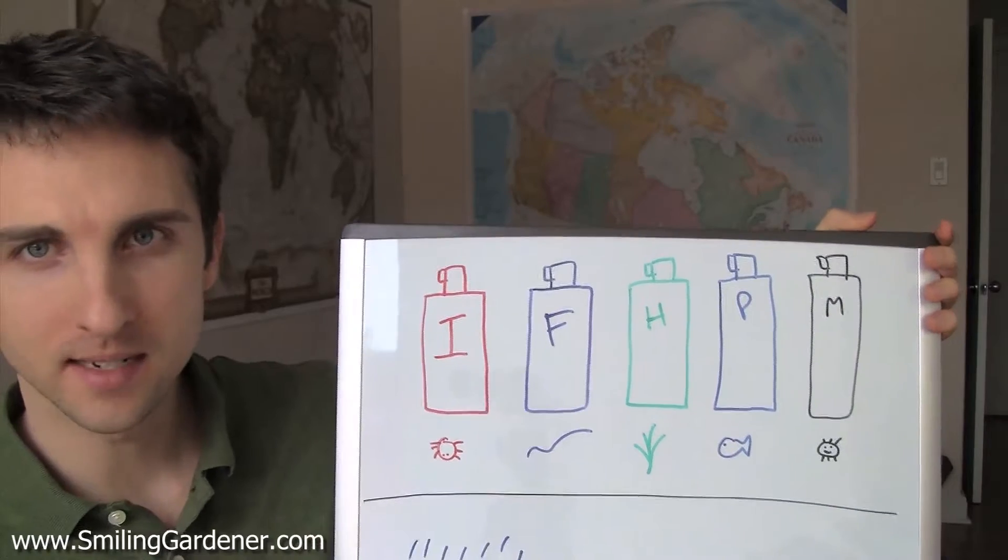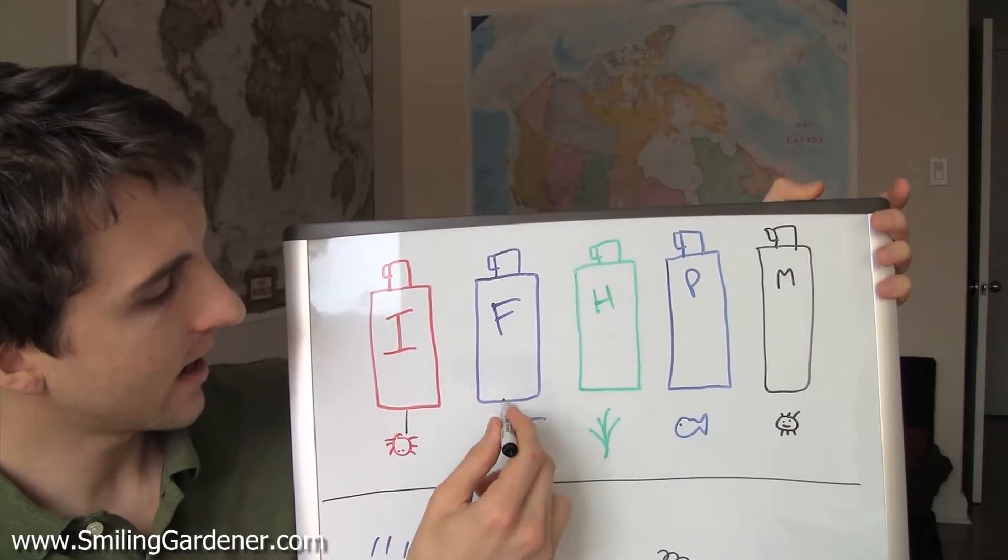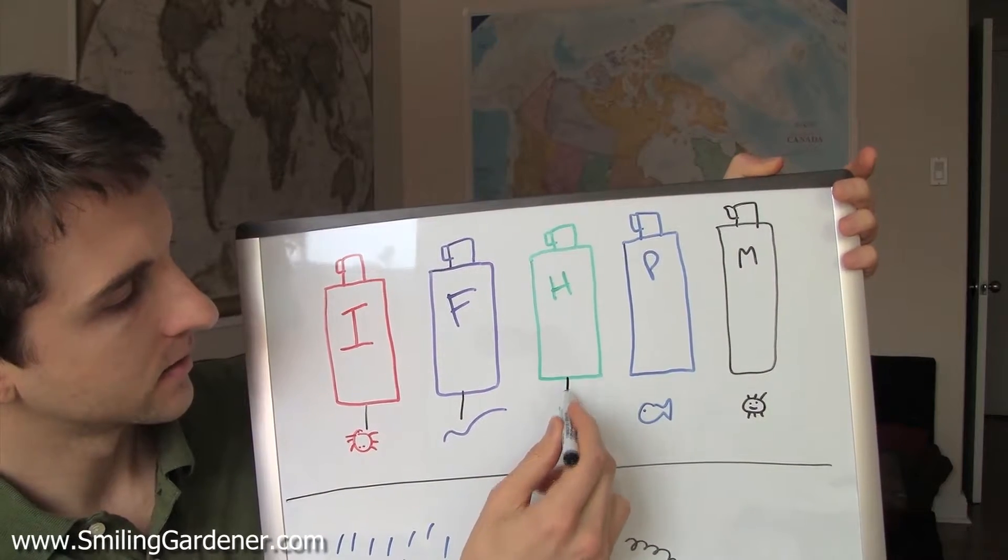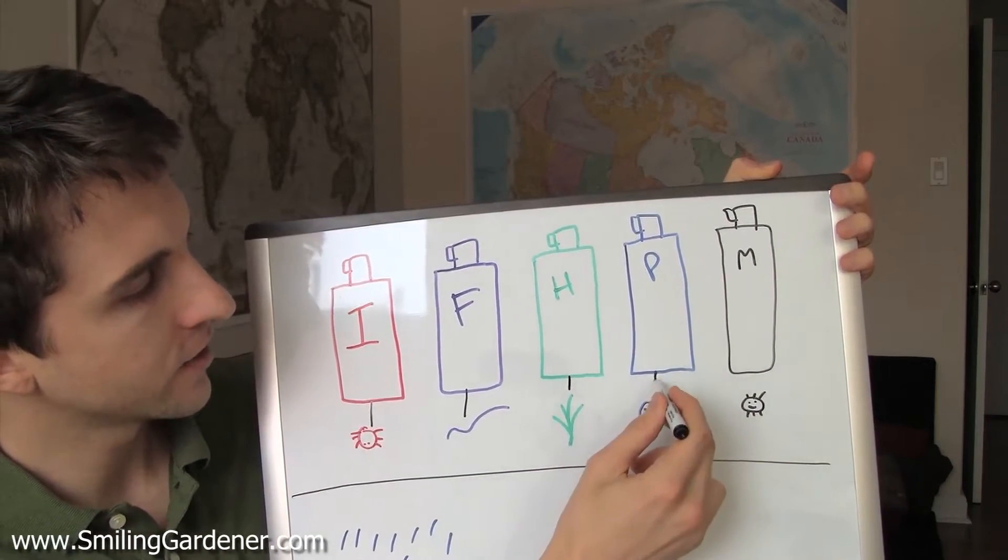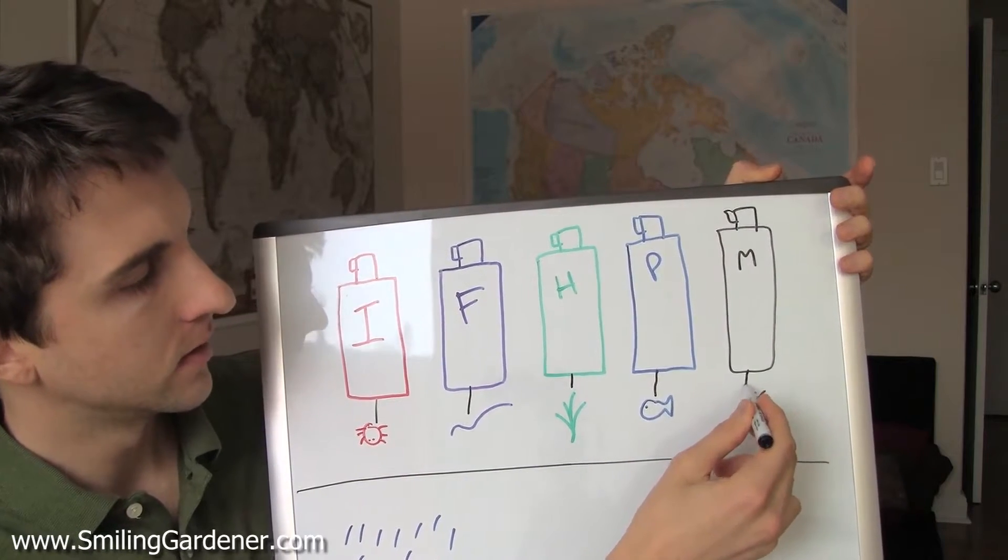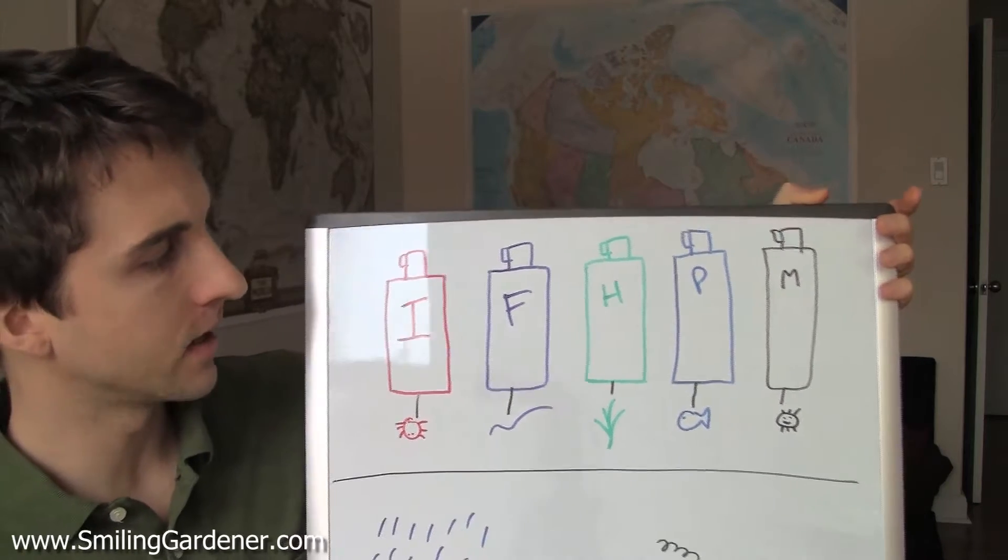Insecticides are meant to kill insects, fungicides are meant to kill fungi, herbicides are meant to kill plants, piscicides fish, miticides mites, and we have other ones too. Bactericides, avicides for birds and on and on.